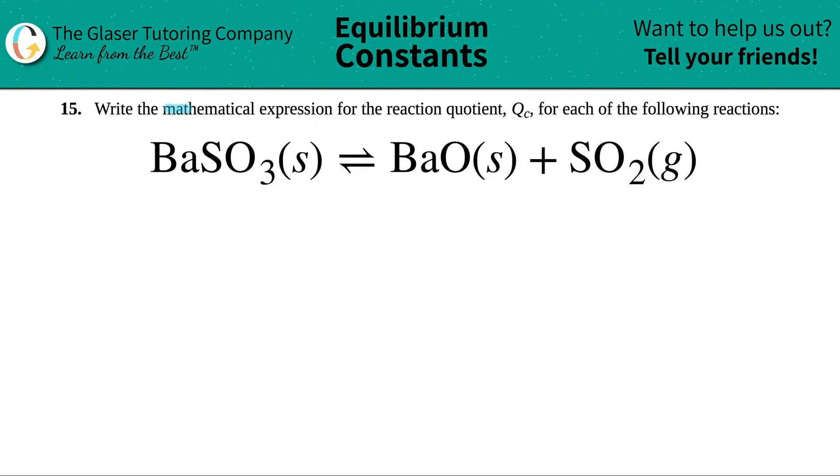Number 15, write the mathematical expression for the reaction quotient, which is QC for each of the following reactions. And then we have this one. So we have to write the QC for BaSO3 solid, which will come to equilibrium with BaO solid plus SO2 gas.